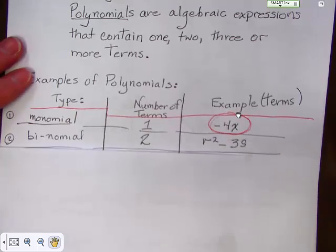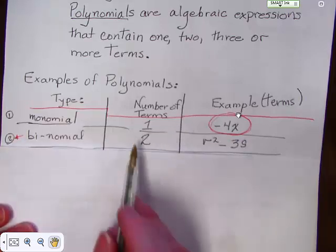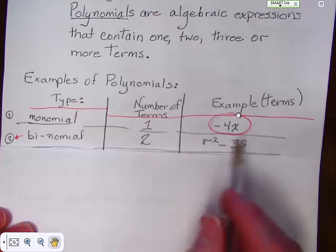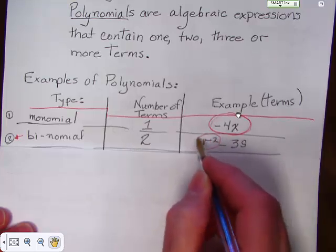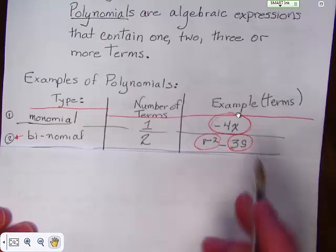Here. Binomial means two. And therefore there are two terms. And here's a term, and here's a term. R squared minus 3s. Two terms.